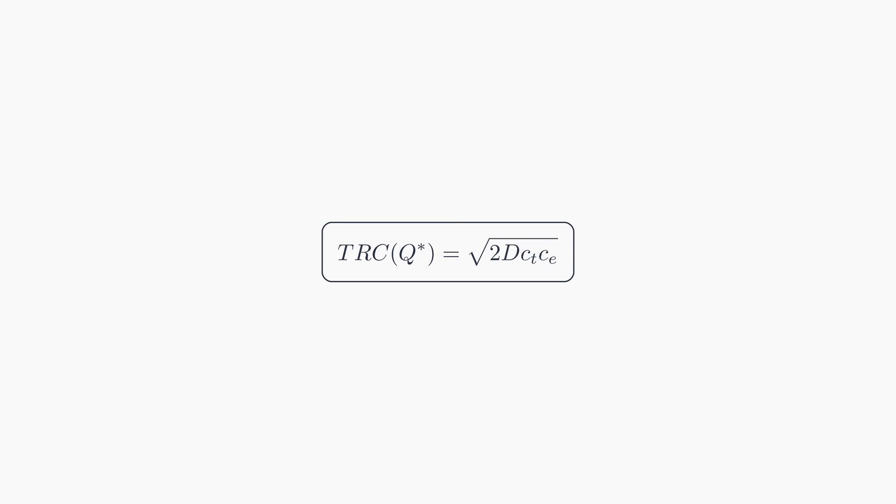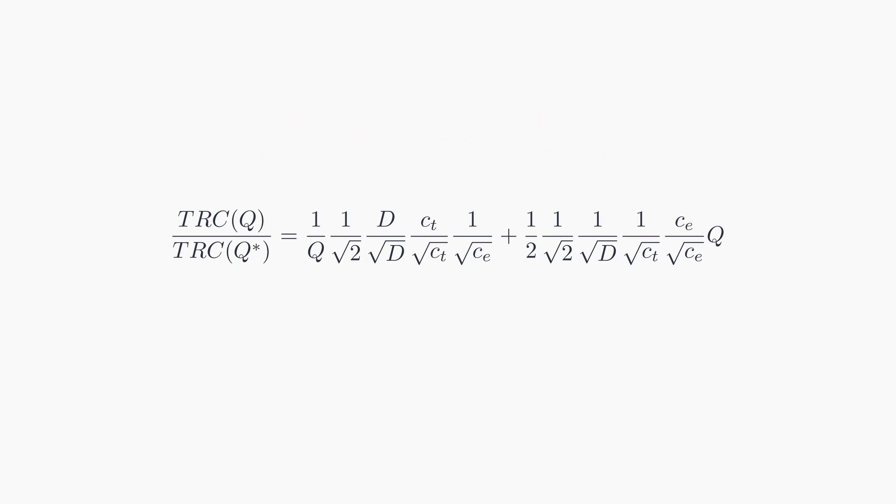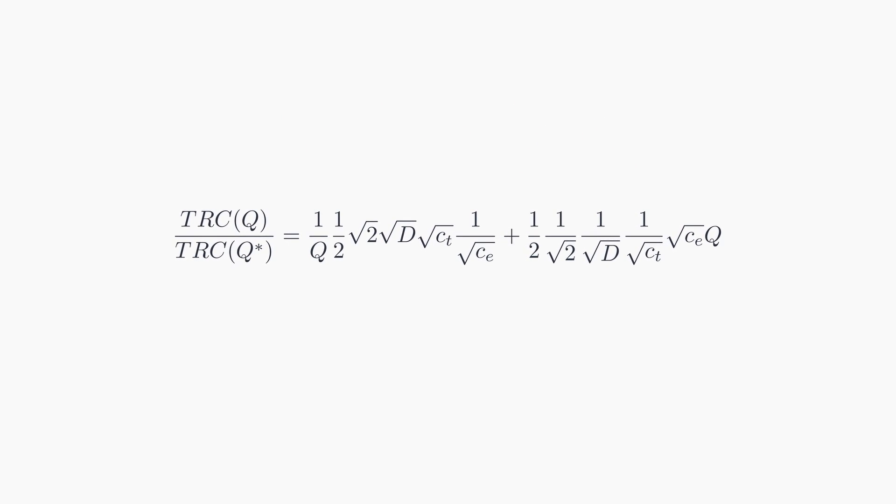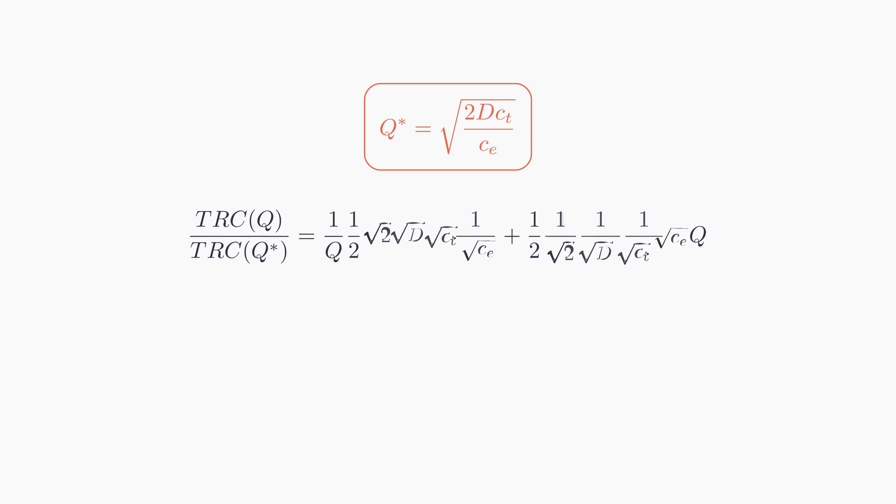This expression offers a straightforward way to determine the optimal or minimum relevant cost. Let's compare it to a variable total relevant cost by setting up a ratio. Keep in mind, this expression signifies a unique value determined by the parameters. In contrast, the other one represents a variable amount that changes with q. Our next objective is to simplify this ratio. To do this, we'll again make use of the previously mentioned properties involving square roots. After some algebraic manipulation, we will notice that the components of the EOQ formula are embedded within this arrangement, allowing us to substitute them with q star.